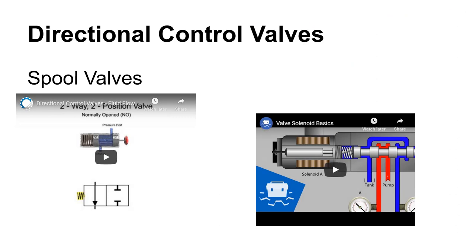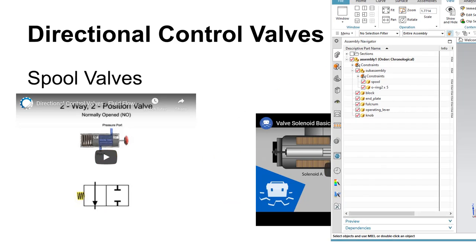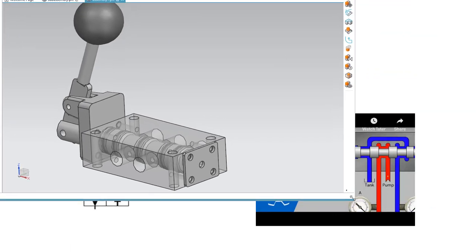Directional control valves are really the bread and butter of a hydraulic or pneumatic system. This is how you get control over actuators like hydraulic motors and hydraulic or pneumatic cylinders — whether a cylinder is extending, retracting, or staying put. There are some really good videos on this that I highly recommend.